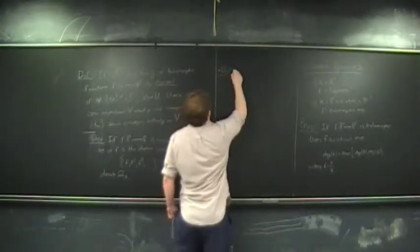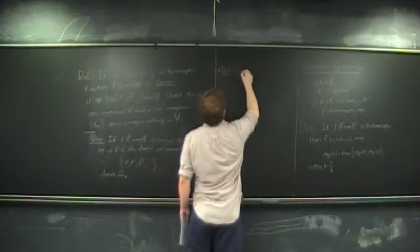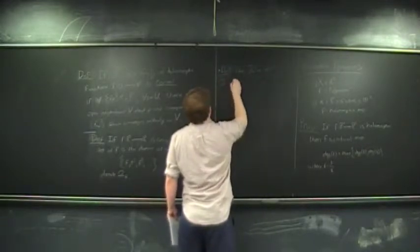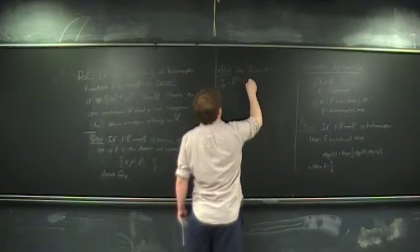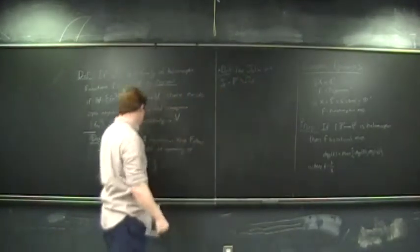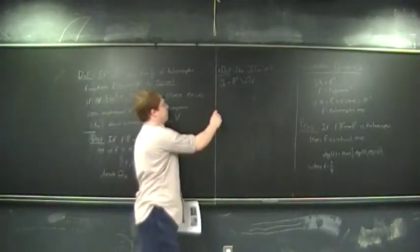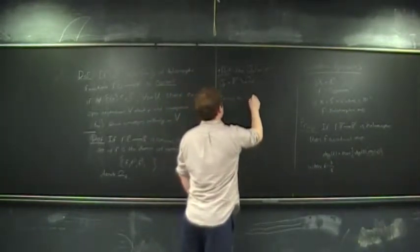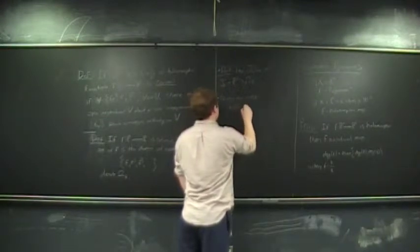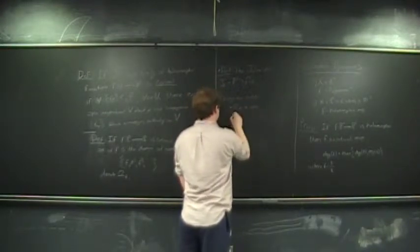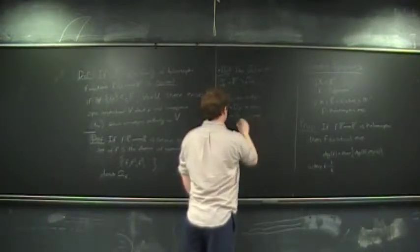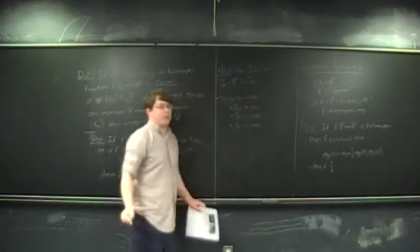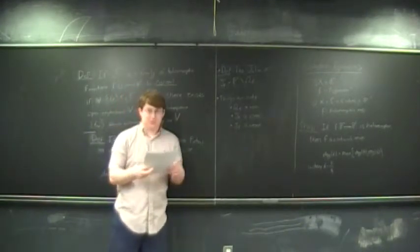From this we get the definition: the Julia set J_f is just the complement of the Fatou set. Since the Fatou set is open, the Julia set is closed. In fact, the Julia set is compact — it's a closed subset of a compact set.